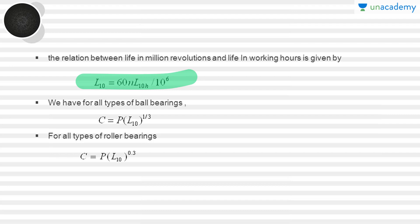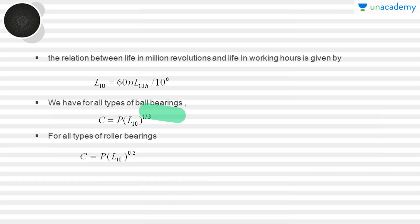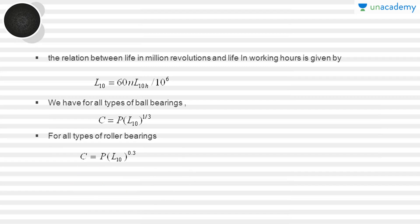For all types of ball bearings, the value of p in this relation becomes 3. Therefore, solving for C, we get C equals P into L10 to the power of 1/3, where the value of p used here for ball bearings is equal to 3.